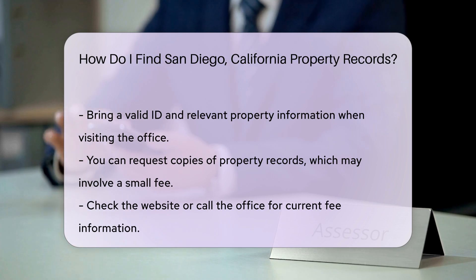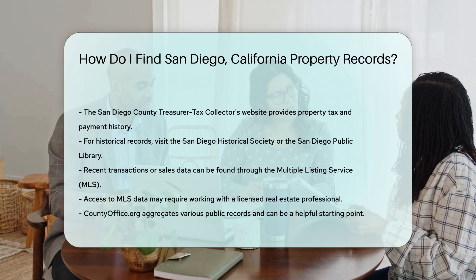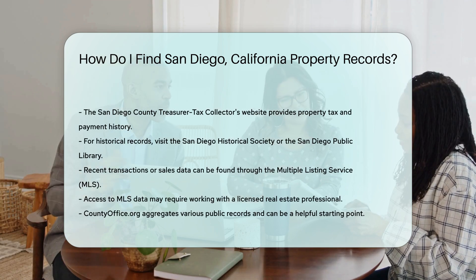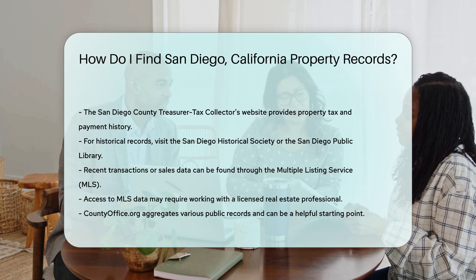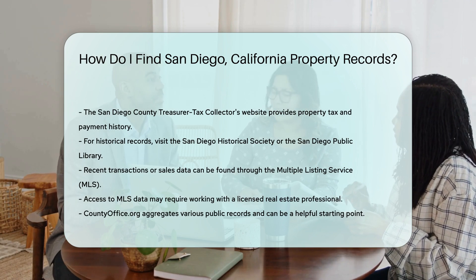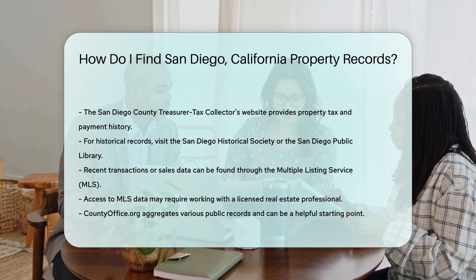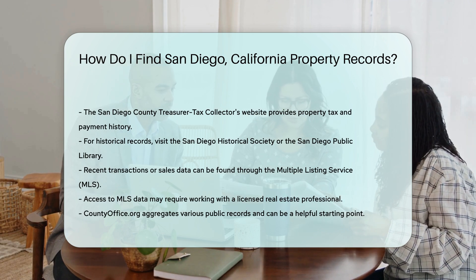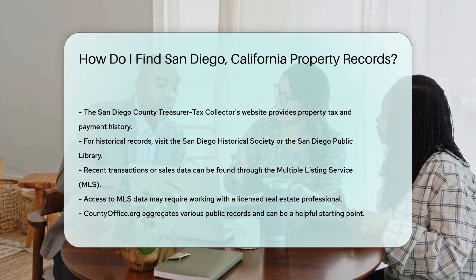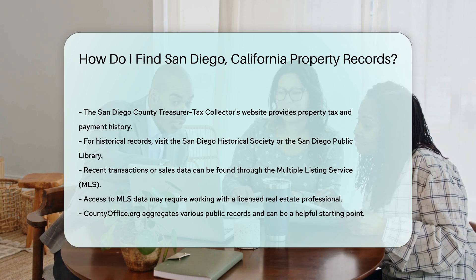For historical property records, you might want to visit the San Diego Historical Society or the San Diego Public Library. These institutions often have archives that can provide additional context and history about a property. If you're looking for recent transactions or sales data, the multiple listing service, MLS, used by real estate agents can be helpful. However, access to MLS data might require working with a licensed real estate professional.